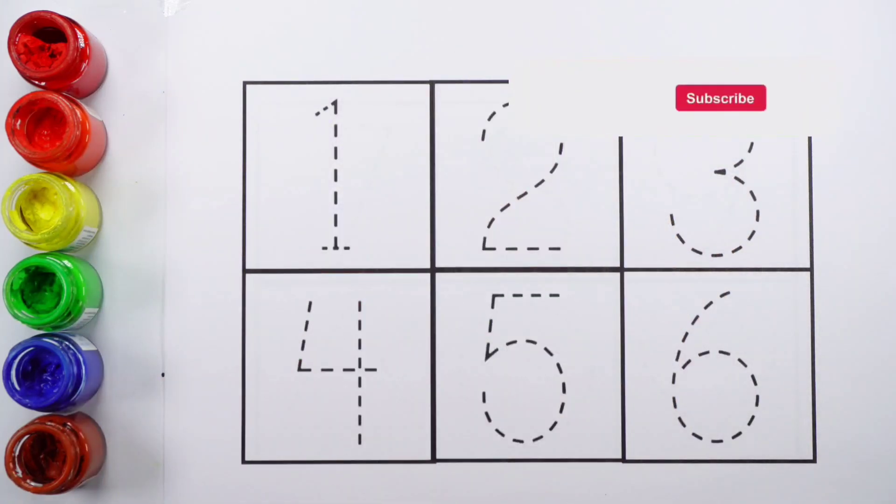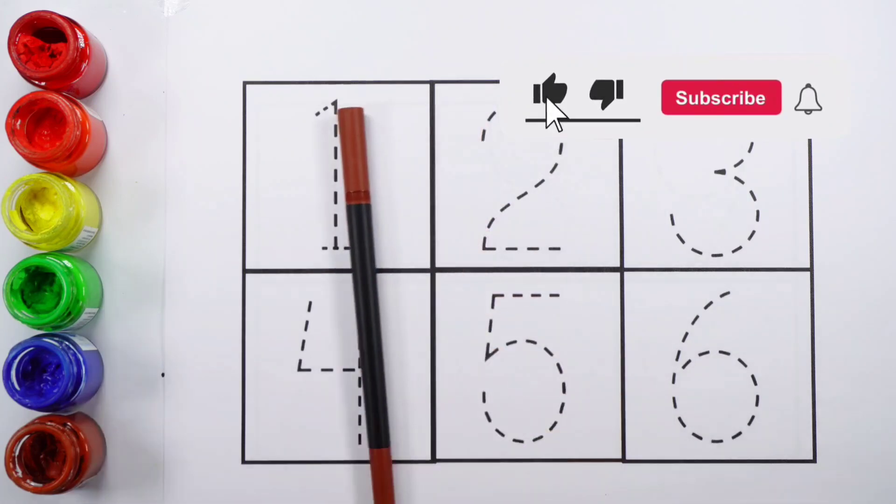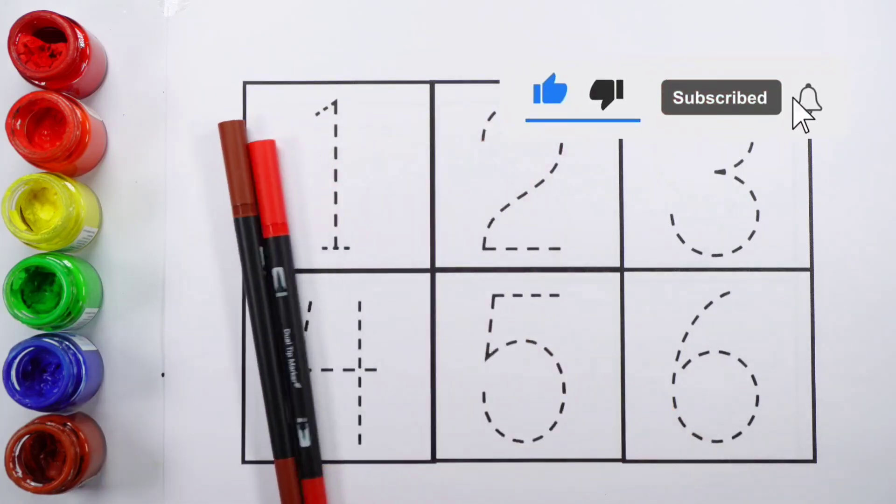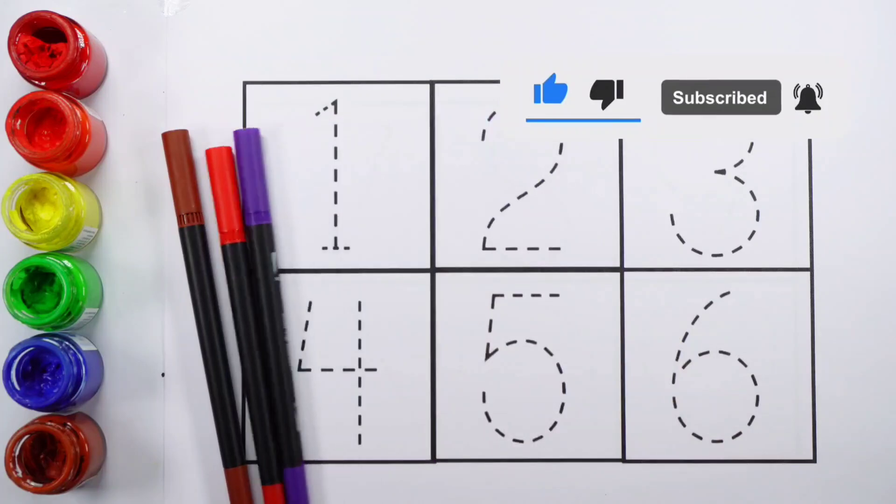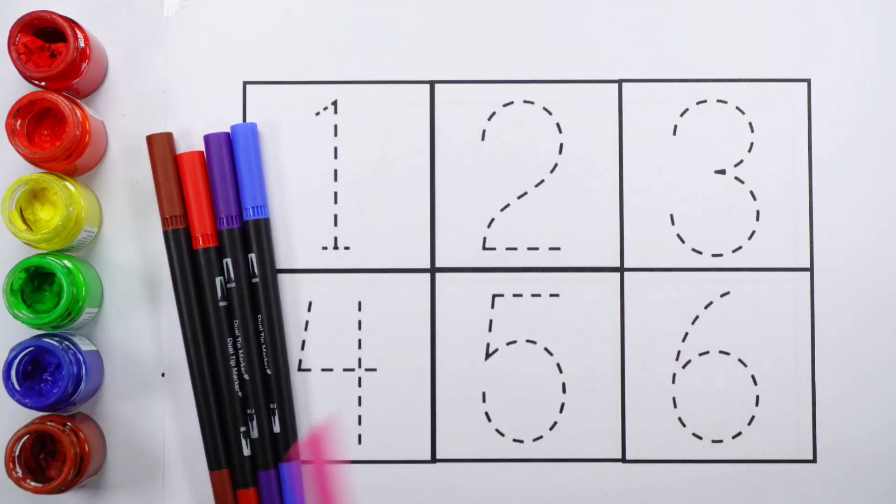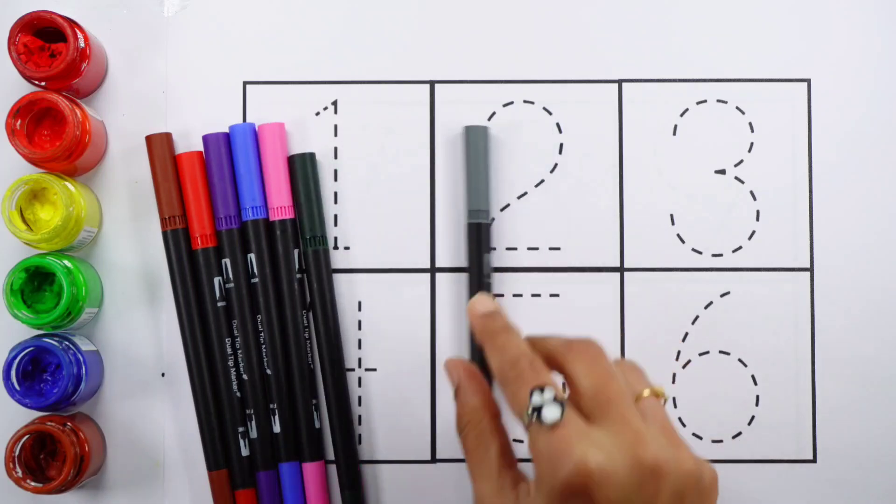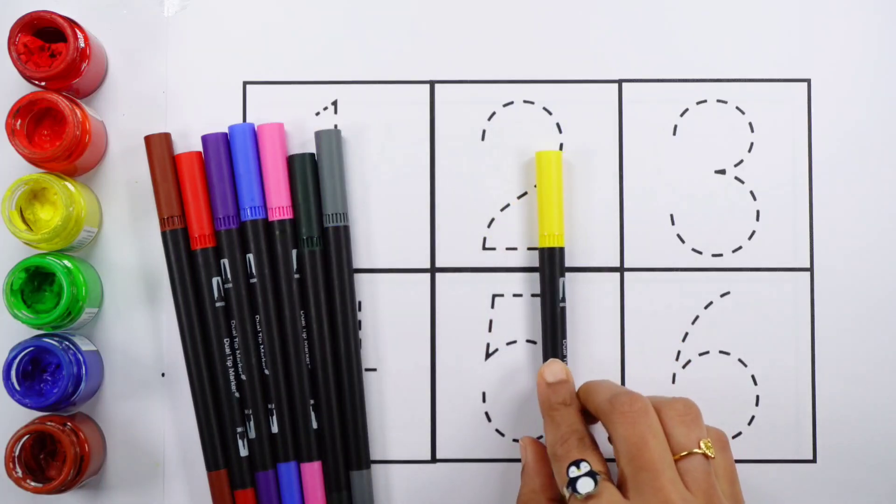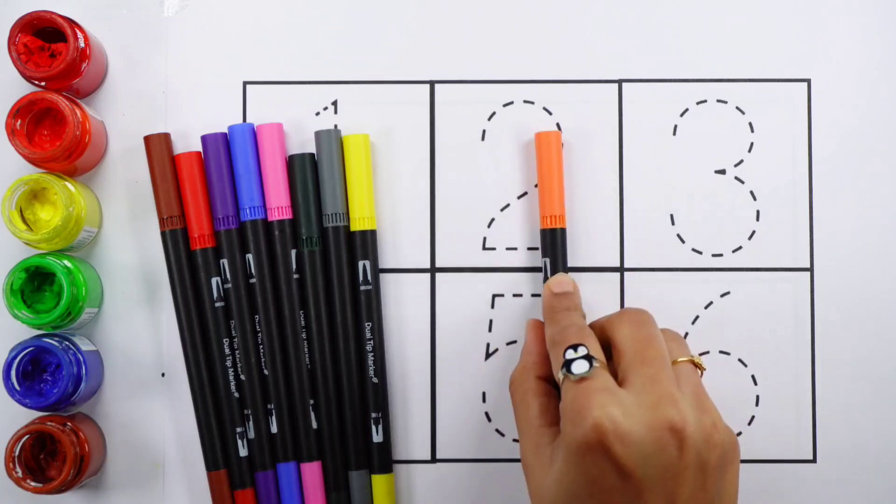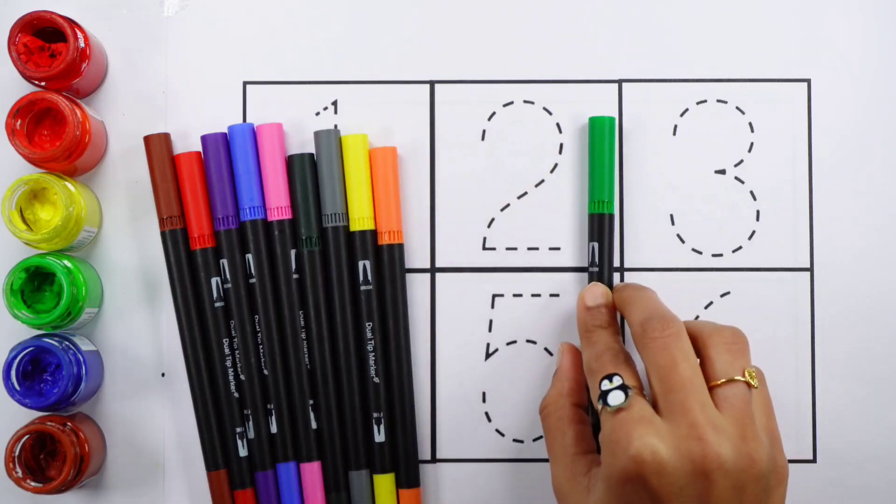Let's learn some colors. Brown color, brown color, red color, violet color, blue color, pink color, dark green color, gray color, yellow color, orange color, light green color, yellow.